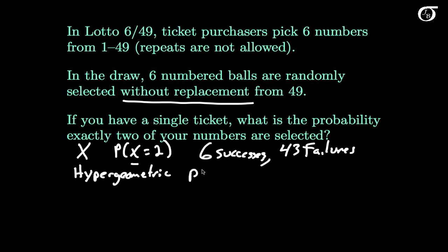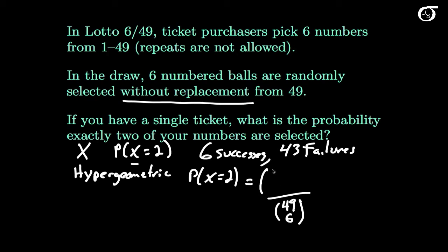Using the hypergeometric distribution, we want the probability that X equals 2. This is the number of ways we can get 2 correct over the total number of possible ways. Picking six balls from 49, the total number of ways is 49 choose 6. In the numerator, we need the number of ways of getting exactly 2 correct: from our 6 chosen numbers, 2 must be chosen (6 choose 2), and from the 43 we didn't pick, 4 must be chosen (43 choose 4). We get a probability of 0.1324.